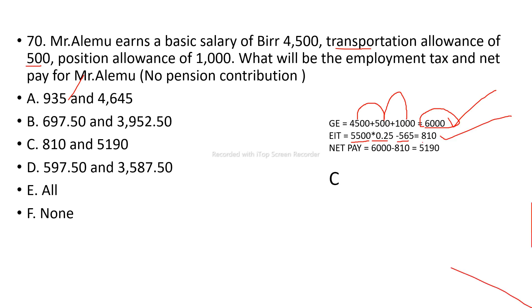In this case, gross earnings minus total deductions gives the net pay. The pension contribution and employment income tax are both deductions. Net pay equals gross earnings minus tax minus pension deduction — that is the final net pay figure.